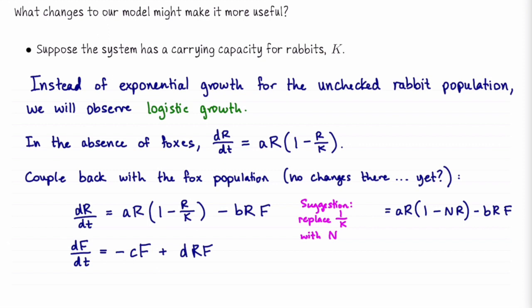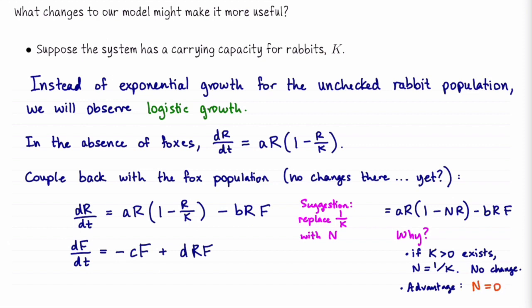What's the advantage here? If k exists — if we have a carrying capacity — n is just 1/k, so we haven't really changed anything, just rewritten it differently. But this also allows us to set n equal to zero, which returns our original equation. So in MATLAB we can specify n equals zero to see the original model, or a positive number to see this carrying capacity model, rolling everything into one equation.